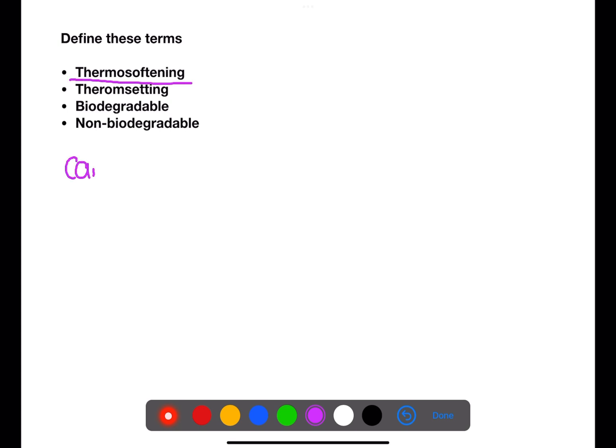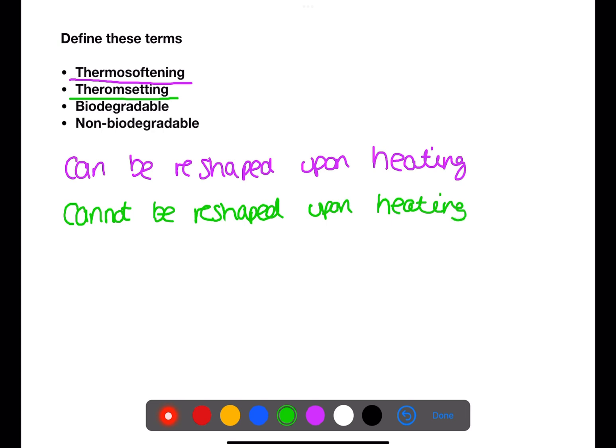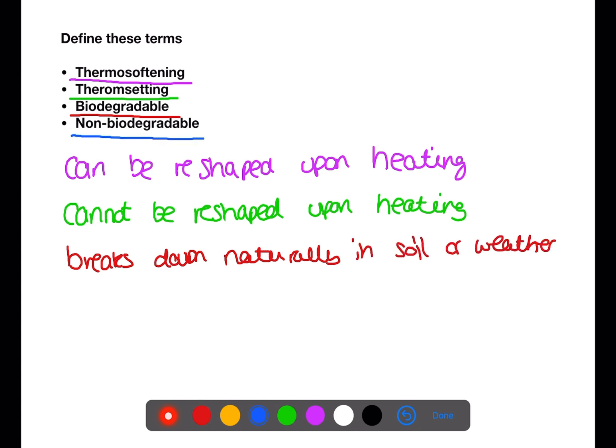Thermosoftening means that the plastic can be reshaped upon heating. Thermosetting means that the plastic cannot be reshaped upon heating. Biodegradable means that the plastic will break down naturally in the soil or weather. Non-biodegradable means that the plastic will not break down naturally.